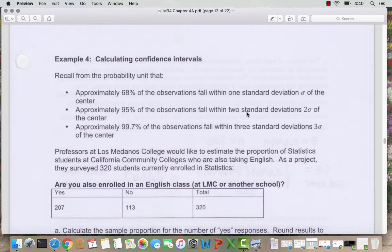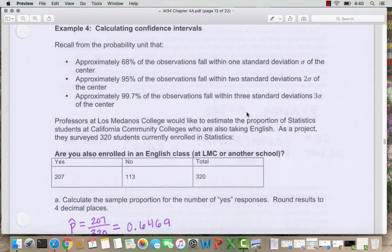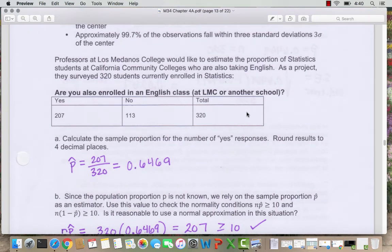Remember from our probability unit last chapter that approximately 68% of the observations fall within one standard deviation, approximately 95% of the observations fall within two standard deviations, and approximately 99.7% of the observations fall within three standard deviations.